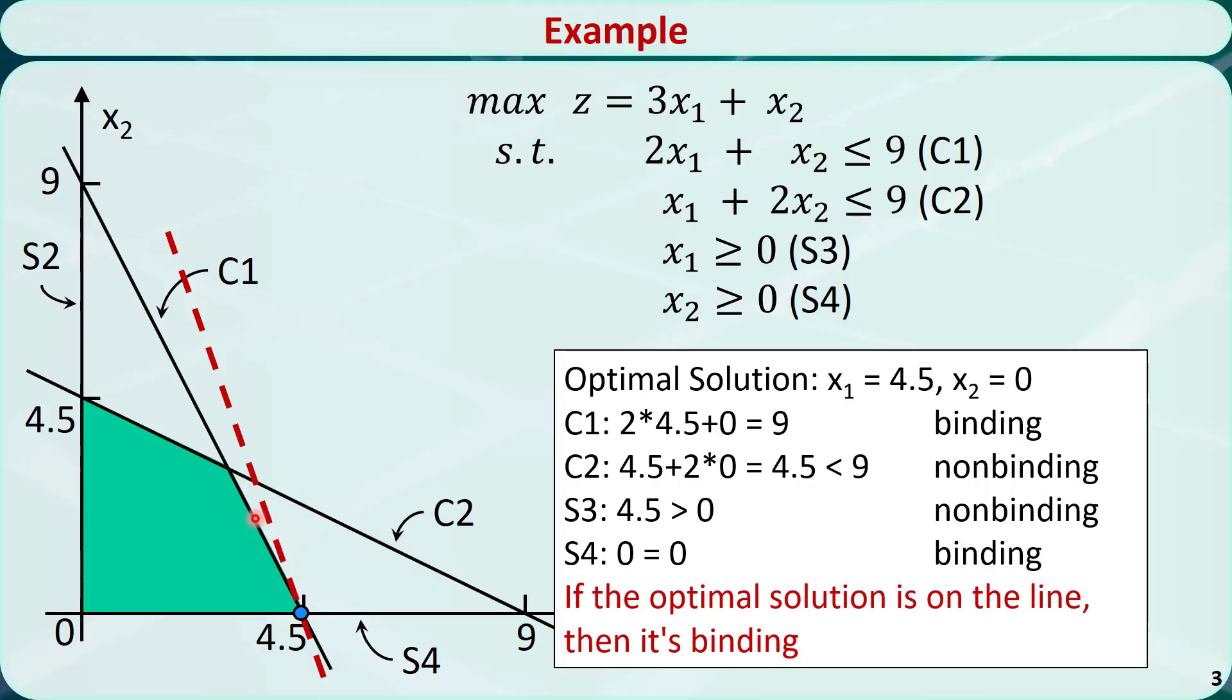The optimal point is on c1 and s4, so they are binding. The other two constraints are non-binding.